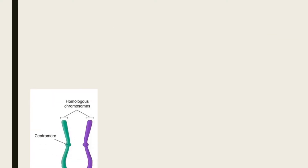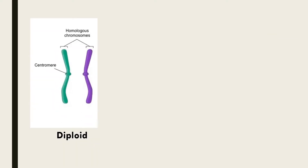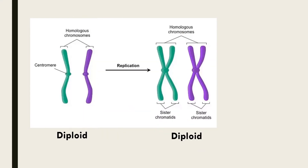Therefore if a cell contained these chromosomes it would be a diploid cell as it contains two copies of the chromosome. After DNA replication the cell is still diploid as it too contains two copies of the chromosome. The only difference is the composition of its chromosomes in terms of the number of chromatids.